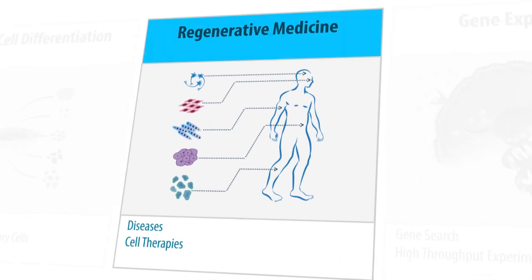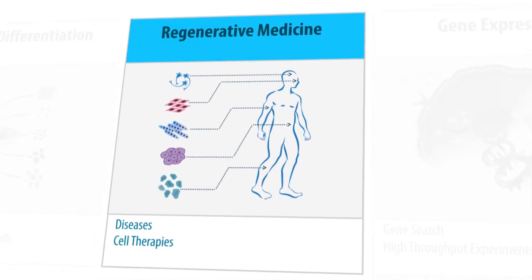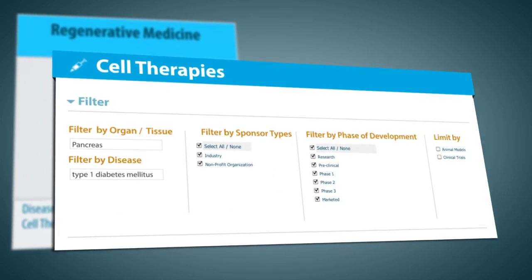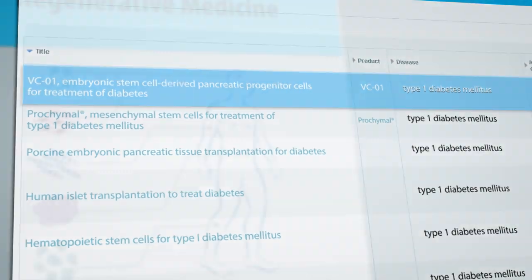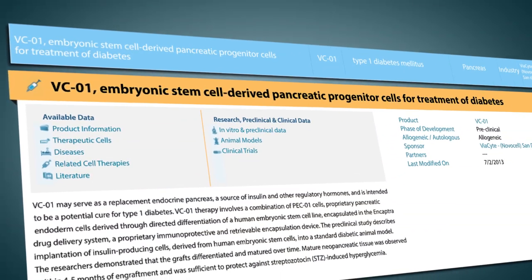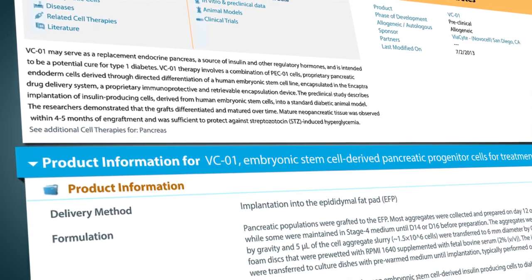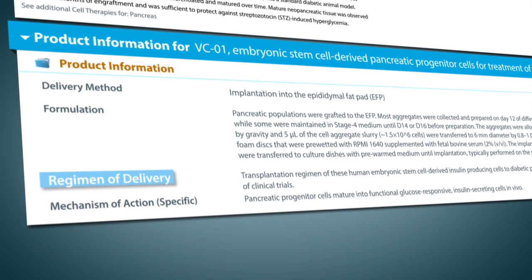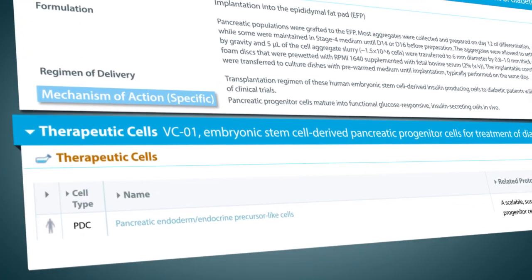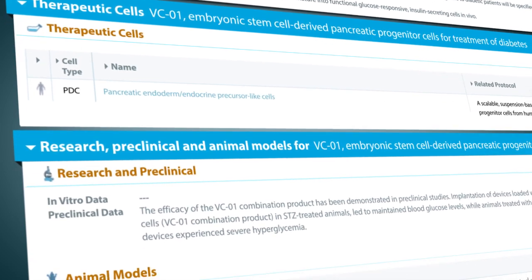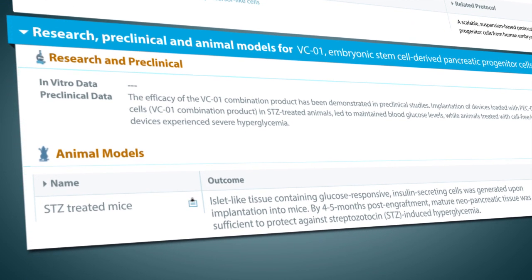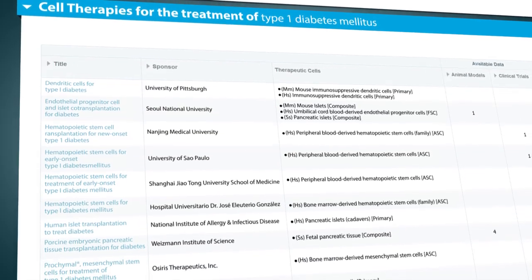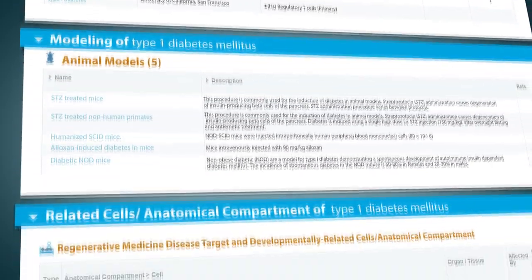Our regenerative medicine module features searchable information about diseases and associated cell therapy applications. Discover a wealth of information on cell-based therapeutic products in development and on the market. For each product, the unique therapeutic approach and cells used for treating a specific disease are outlined in comprehensive detail, including cell delivery method, formulation, dosing regimen, mechanism of action, therapeutic cells, animal models, and preclinical and clinical data. Each related disease includes information about disease etiology, effects and symptoms, cell therapies, animal models, and links to affected in vivo cells.